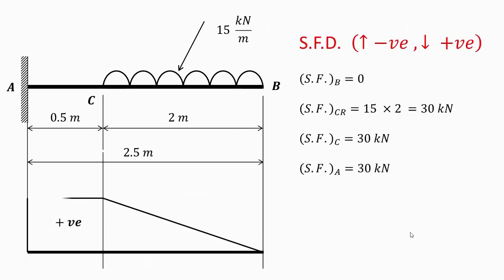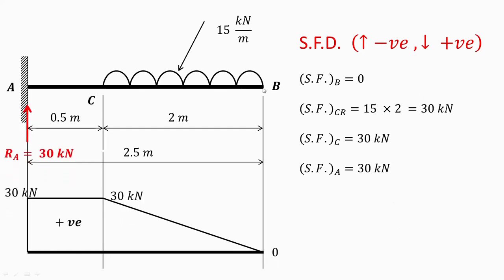The conventions which we have used are: upward forces negative and downward forces positive. Shear force at point B will be zero because this is the starting point of the uniformly distributed load. At point C, just to the right of C, we have to consider this particular UDL.